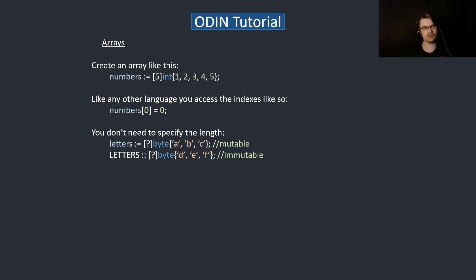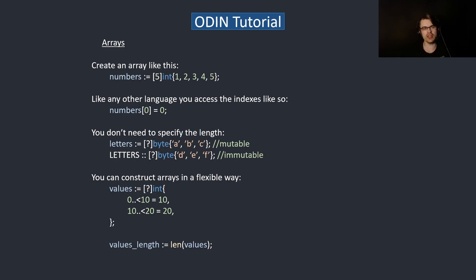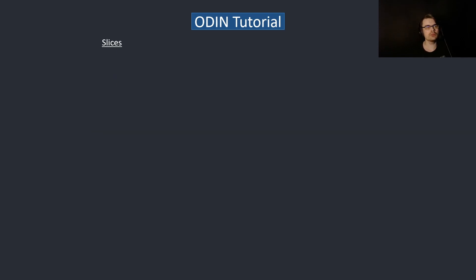A byte is just representing a Unicode character. Array creation is very flexible — you can infer the length, so here the length will be 20. You can get the length afterwards with `len`. The first 10 elements will be 10, the second 10 elements will be 20. It's basically like a loop within a constructor.